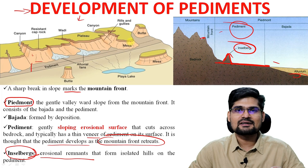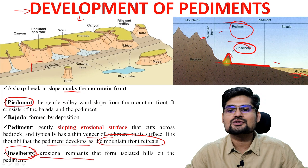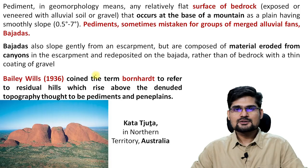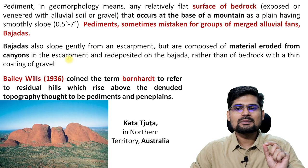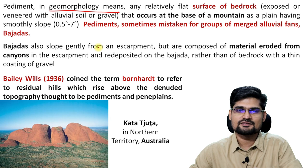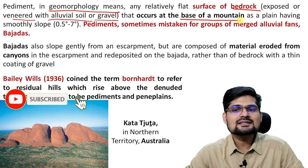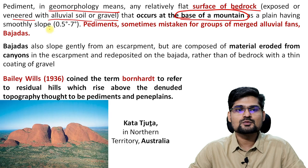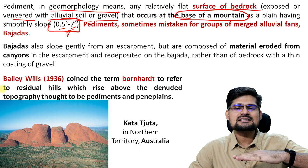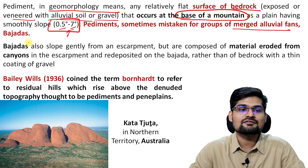Inselbergs or bornhardts are the remnants on these erosional surfaces — hard rock surfaces that could not get eroded. Going by basic definition, pediment in geomorphology means a relatively flat surface of bedrock exposed or veneered — coated with alluvial soil or gravel material — that occurs at the base of a mountain. It is a plane having a smoothly inclined slope of 0.5 to 7 degrees, so it's a very gentle slope. Pediments are sometimes mistaken for groups of merged alluvial fans and bajadas.